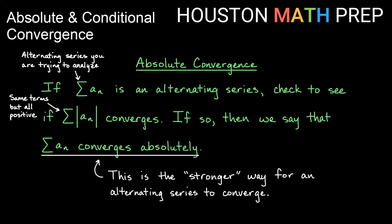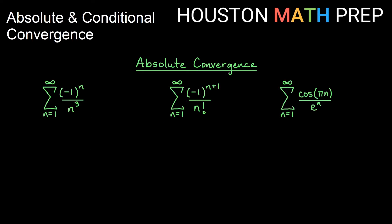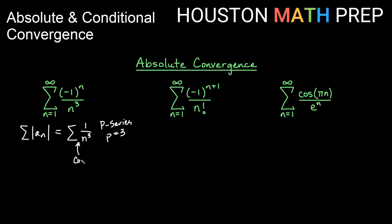Converging absolutely is the stronger way, out of absolute convergence and conditional convergence, for an alternating series to converge. Looking at our first example: the infinite sum of (-1)^n over n cubed. Checking for absolute convergence means we look at the sum of |1/n^3|, which is just 1 over n cubed. This is a p-series with p equal to 3, which is greater than 1, so we know that series converges. Since the absolute value series converges, the original alternating series converges absolutely — by the p-series test.